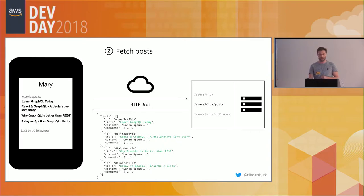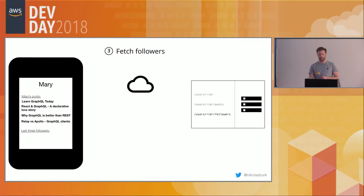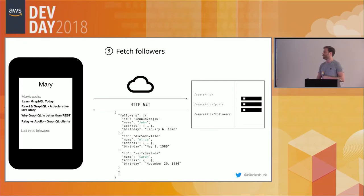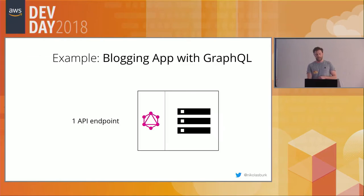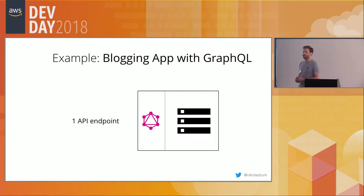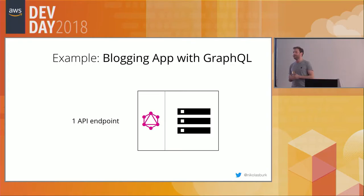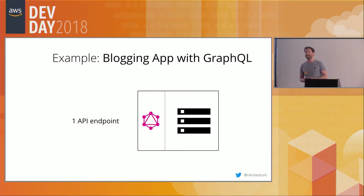At least we get the post titles to render on screen, and the same situation applies for the followers endpoint - we get some JSON back and display the first names of followers.